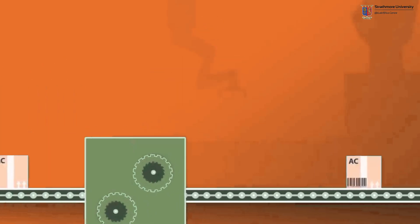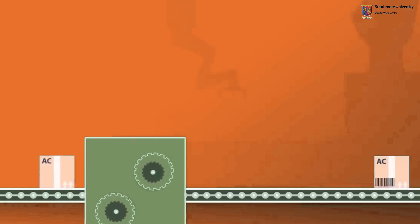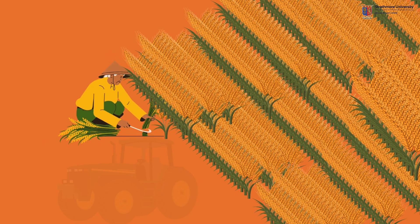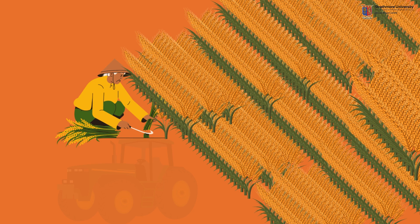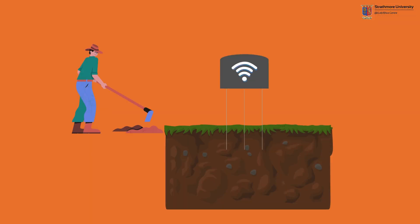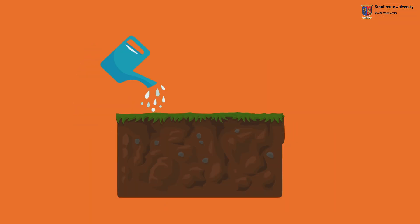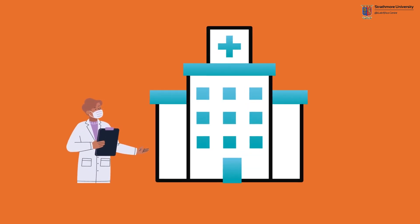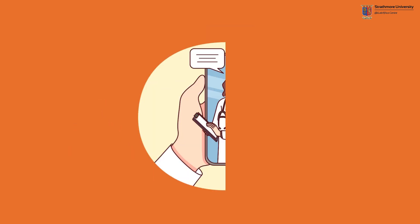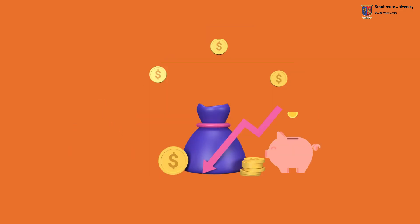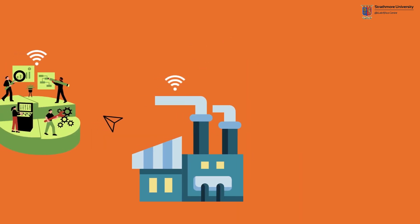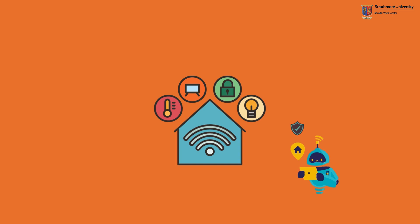In industry, IoT drives efficiency and innovation — factories use IoT for predictive maintenance, reducing downtime. In agriculture, smart sensors monitor soil conditions to optimize watering and fertilization. In healthcare, IoT enables remote patient monitoring, improving care and reducing costs.